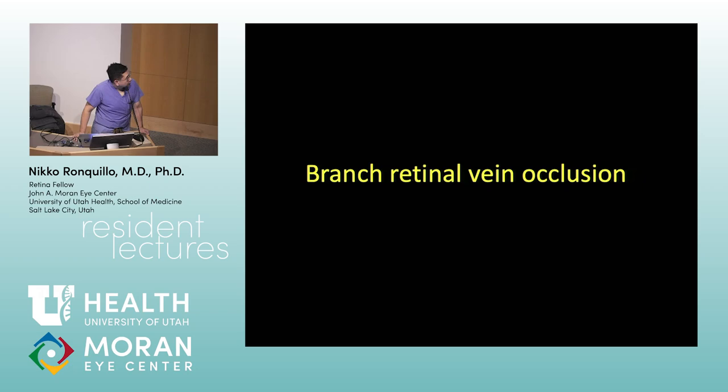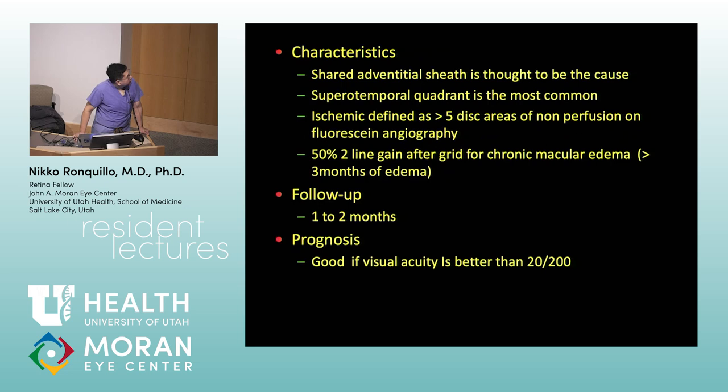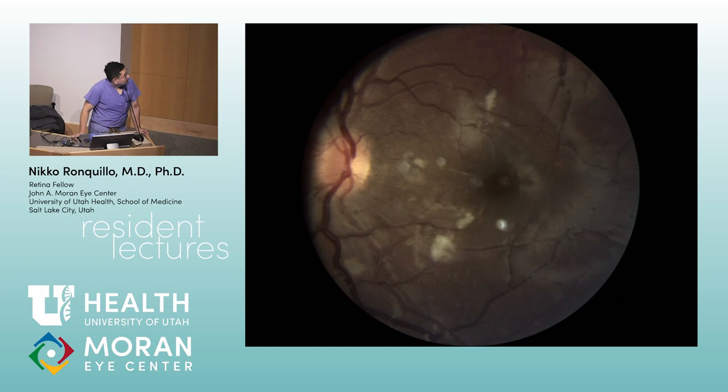Next — BRVO, also with sectoral blood-and-thunder appearance. One high yield OCAPS question for BRVO: which quadrant is most commonly affected? Superotemporal — that's the answer.